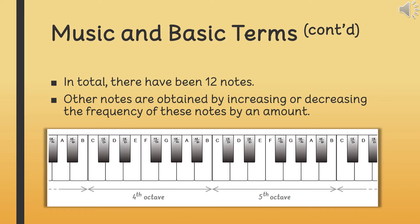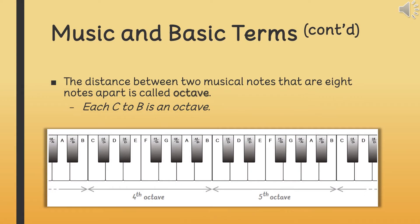These are black ivories in piano. Other sounds are obtained by increasing or decreasing the frequency of these notes. The interval between each C to B, which are eight notes apart, constitutes an octave.